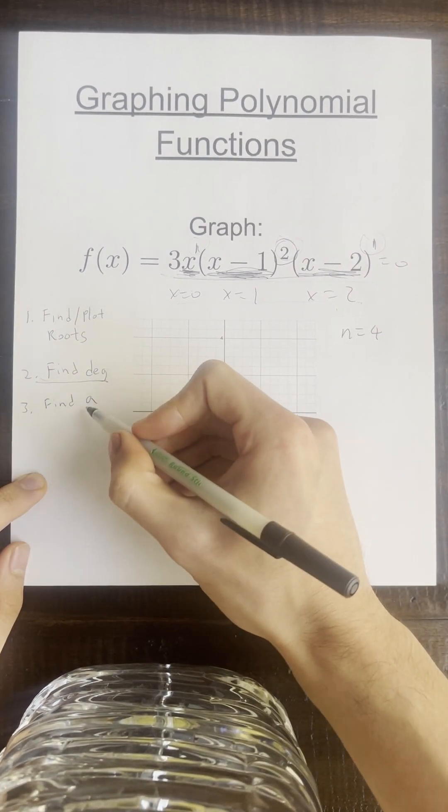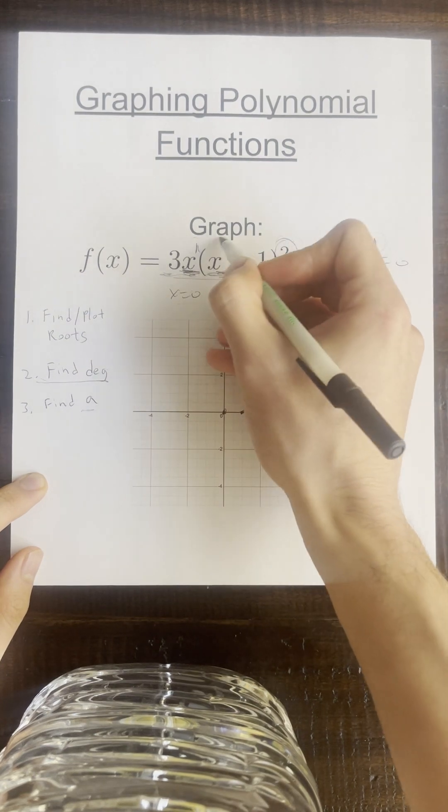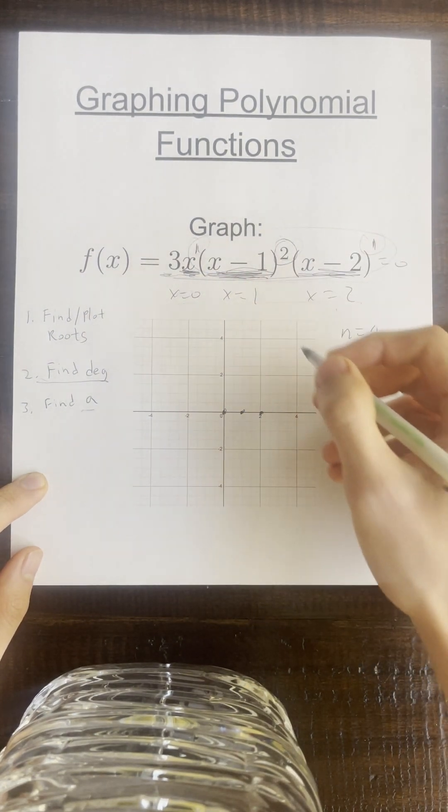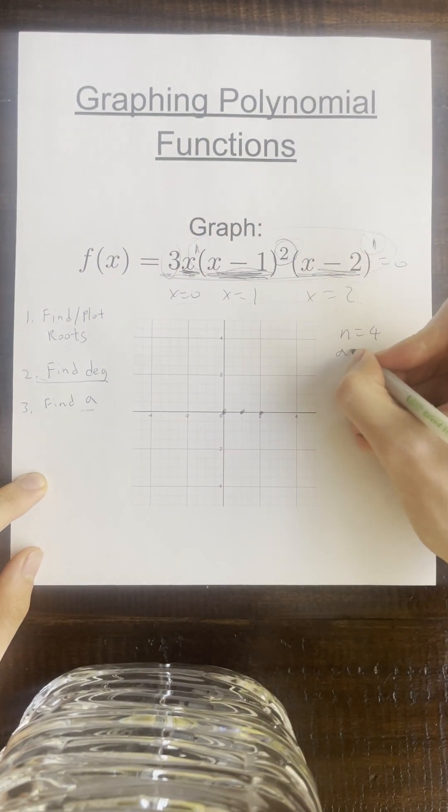Our third step would be to find a. So the number in front of all of these factors, which is how much? It's three. So I'm going to write a equals three.